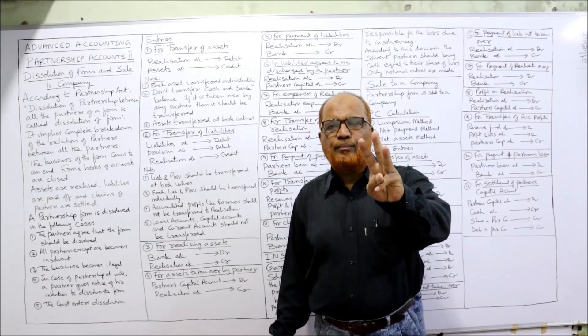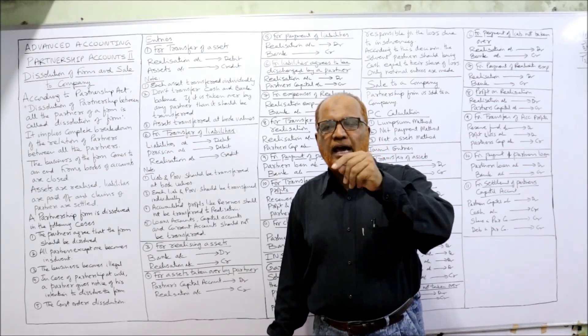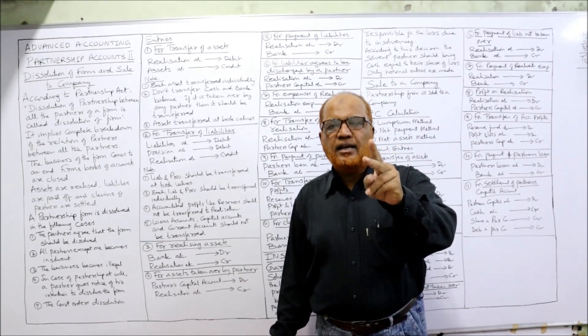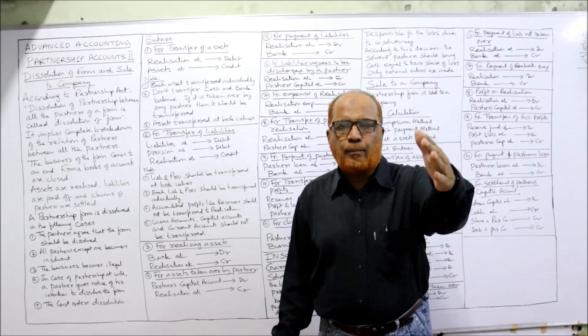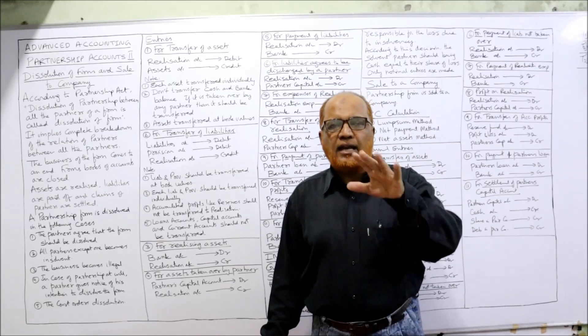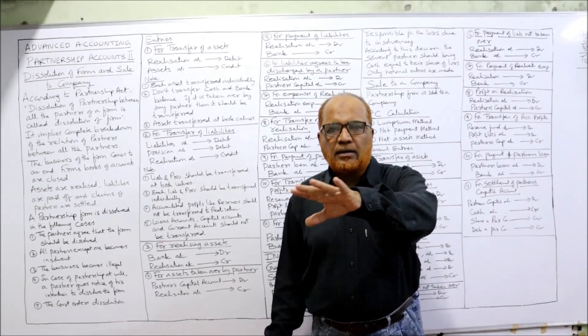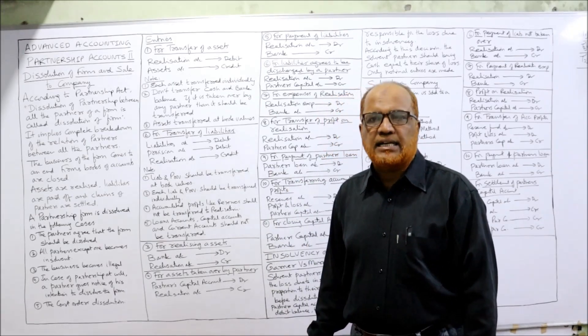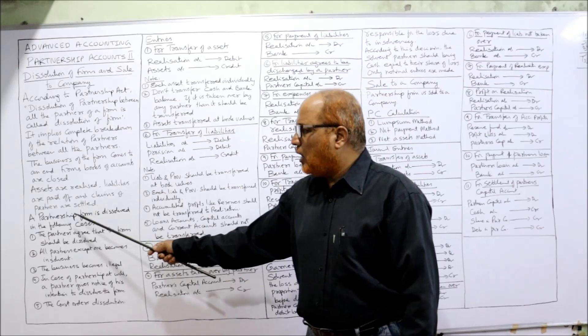So on dissolution, three things are going to happen. First, assets are realized. Secondly, liabilities are paid off. And thirdly, partners' accounts are settled.